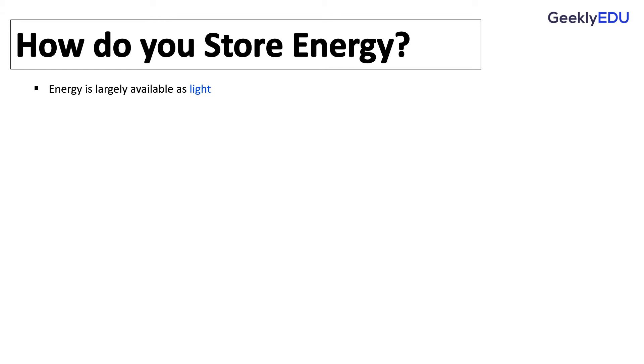So let us first talk about energy. How do you store energy? Energy on Earth is available from the Sun, and the Sun gives energy which is available as light. But how do you store that energy? You use it to form chemical bonds.